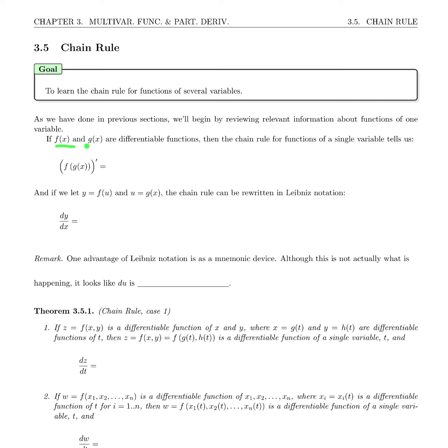If f and g are differentiable functions, then the chain rule for a function of a single variable tells us that the derivative of the composition f of g of x is f prime of g of x times g prime of x.